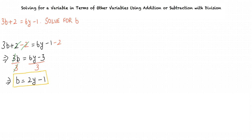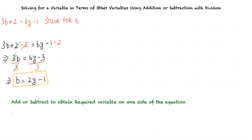I understand the concept. But just to be sure — in order to solve for a variable, we first add or subtract on both sides of the equation so that we obtain the required variable on one side of the equation. Finally, we divide on both sides of the equation by the coefficient of the required variable to solve for the variable.